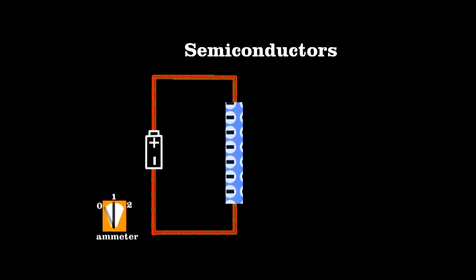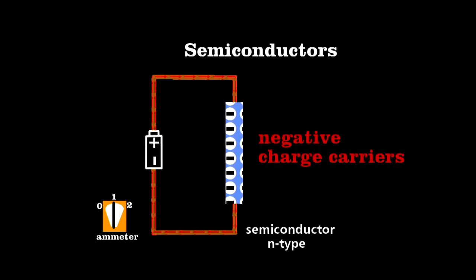As the name implies, they conduct better than insulators, but not as well as conductors. But more importantly, unlike metals, semiconductors have two different ways to conduct electricity - effectively negative and positive charge carriers. That property lies at the heart of a transistor.